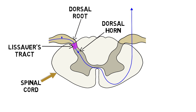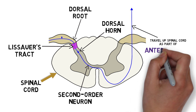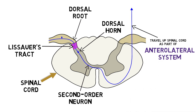These substances activate a second set of neurons, called second-order neurons, that cross over to the other side of the cord to ascend in the anterolateral portion of the spinal cord. Because of their location, the ascending pathways that carry pain and temperature, along with some other sensations, are referred to as the anterolateral system.